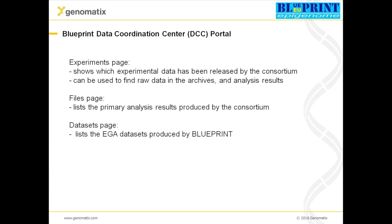At the Data Coordination Center portal you mainly find three different pages. One is the Experiment page, then the Files page, and the Data Sets page. On the Experiments page you get an overview — a matrix actually — of the data that were released so far, and you can get to the raw data in the archives and get the analysis results. On the Files page you have a list of the primary analysis results which you can download. And in the Data Sets page you have the EGA datasets as a list that were generated by Blueprint.